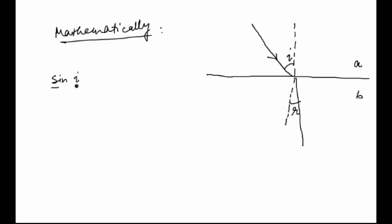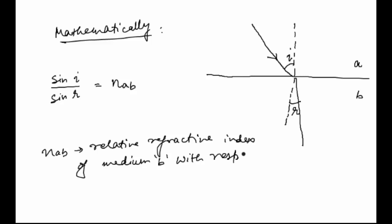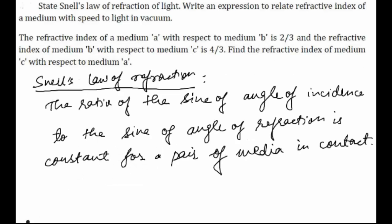sine I by sine R is equal to NAB, where NAB is the relative refractive index of medium B with respect to medium A. This is the answer for our first part. Now let's write an expression to relate the refractive index of a medium with the speed of light in vacuum.